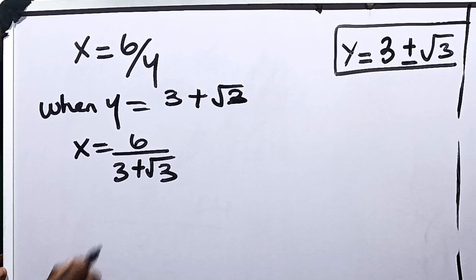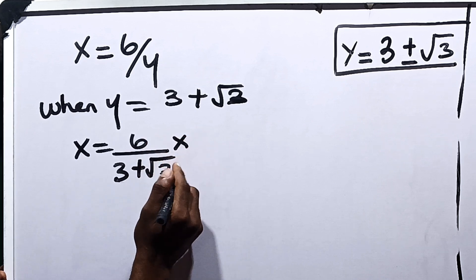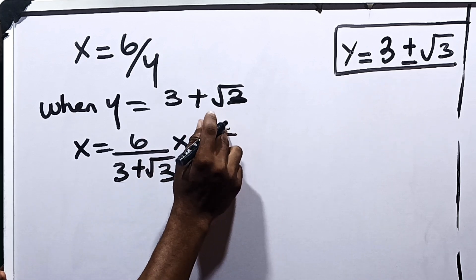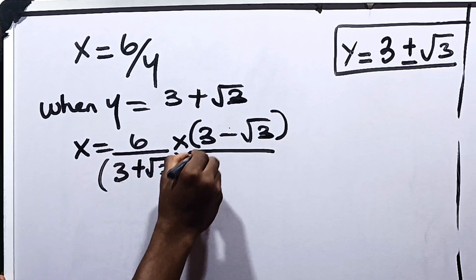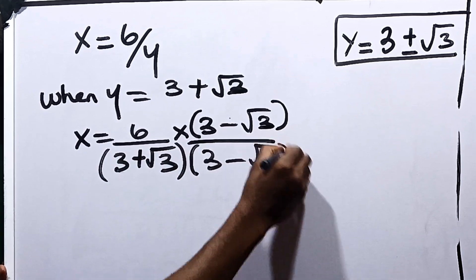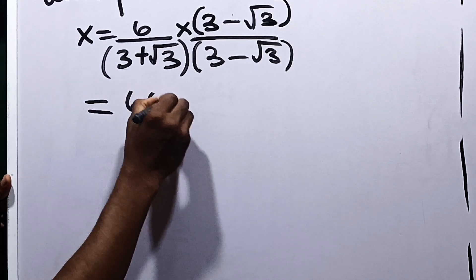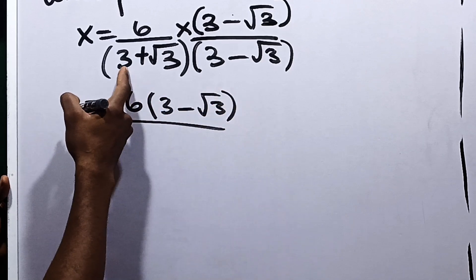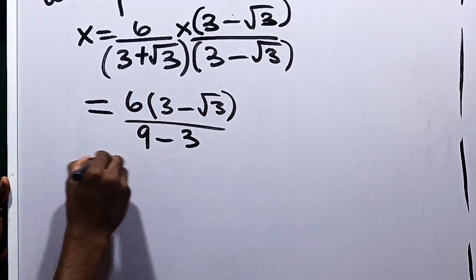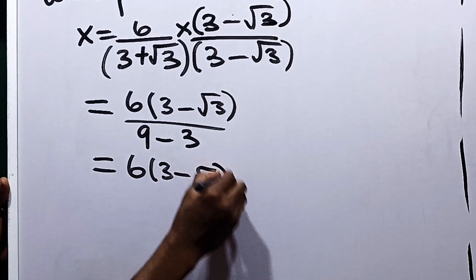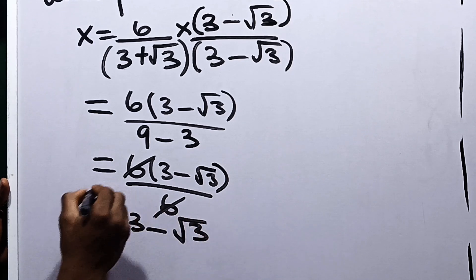Using the procedure known as rationalizing the denominator, we multiply by the conjugate of the denominator. The conjugate of 3 plus root 3 is 3 minus root 3. So we multiply numerator and denominator by 3 minus root 3. The denominator becomes the difference of two squares: 9 minus 3, which is 6. So this equals 6 times (3 minus root 3) divided by 6. The 6s cancel, giving us x equal to 3 minus root 3.